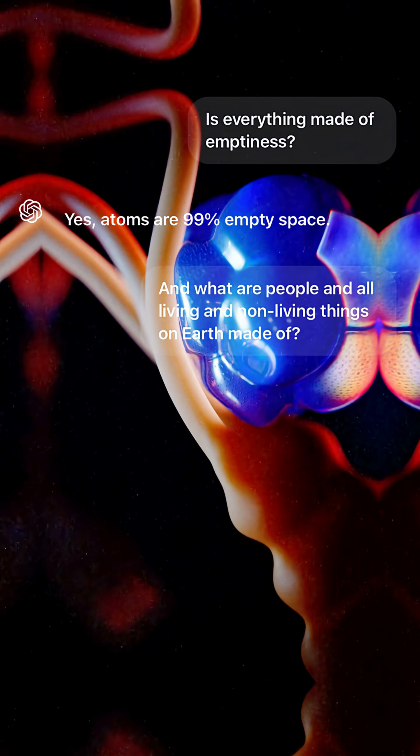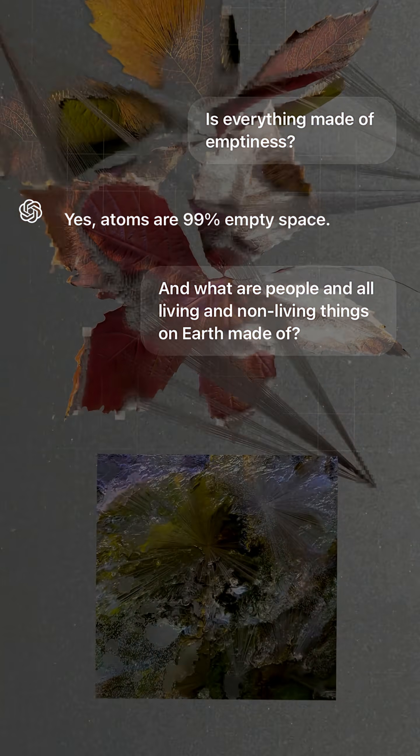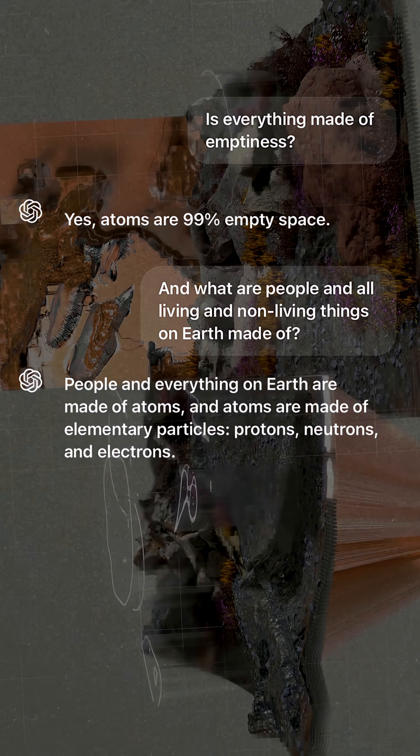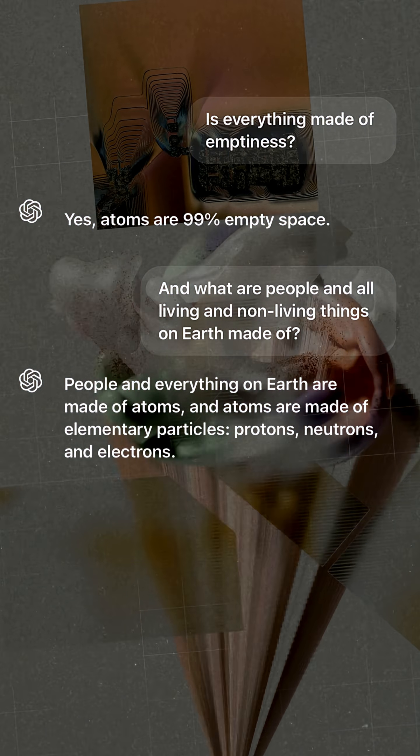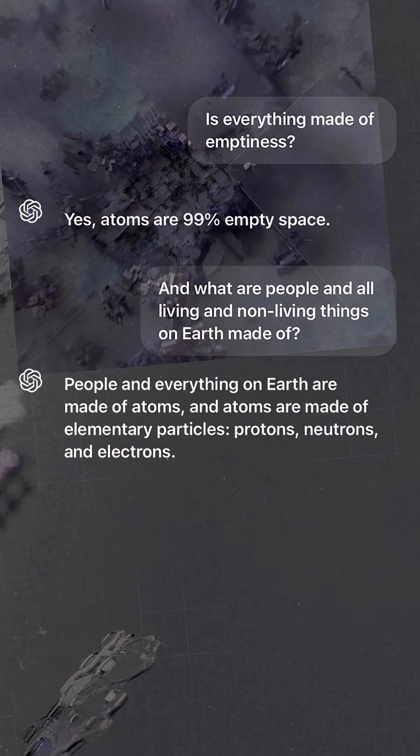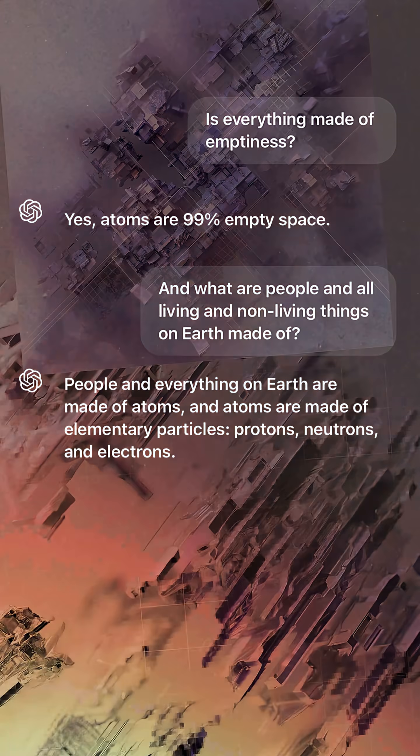And what are people and all living and non-living things on Earth made of? People and everything on Earth are made of atoms, and atoms are made of elementary particles: protons, neutrons, and electrons.